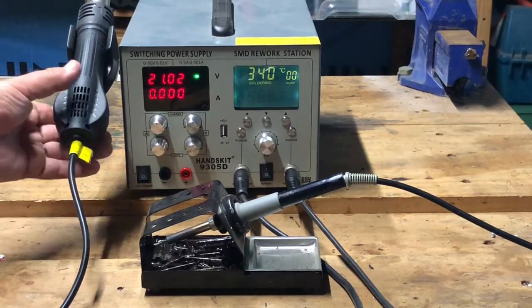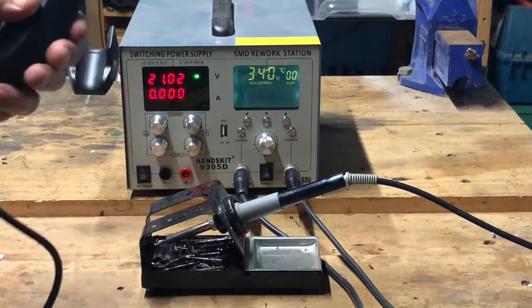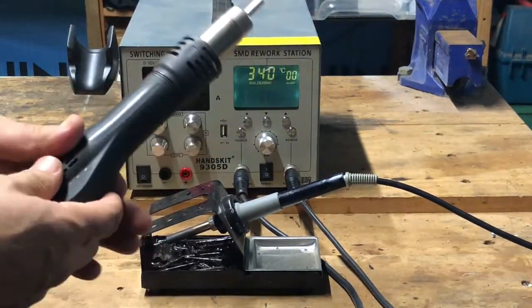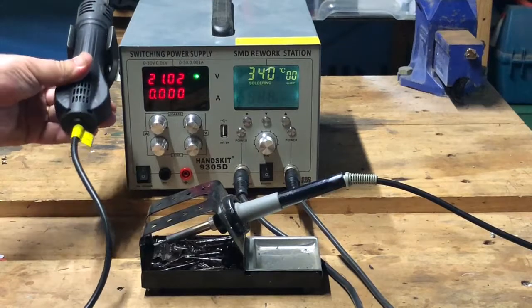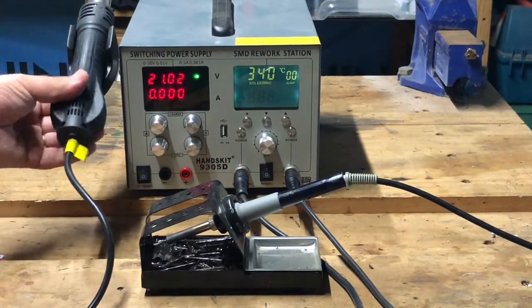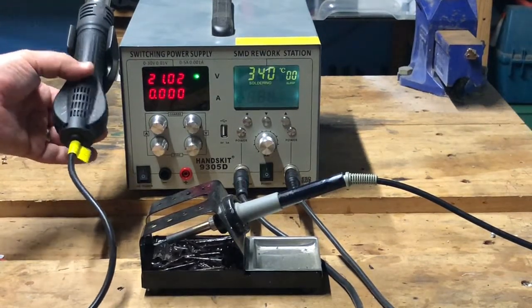In my previous video I mentioned that the heat gun tends not to turn off automatically when you put it back in its holder as it's supposed to, unless you get it oriented in exactly the right position.